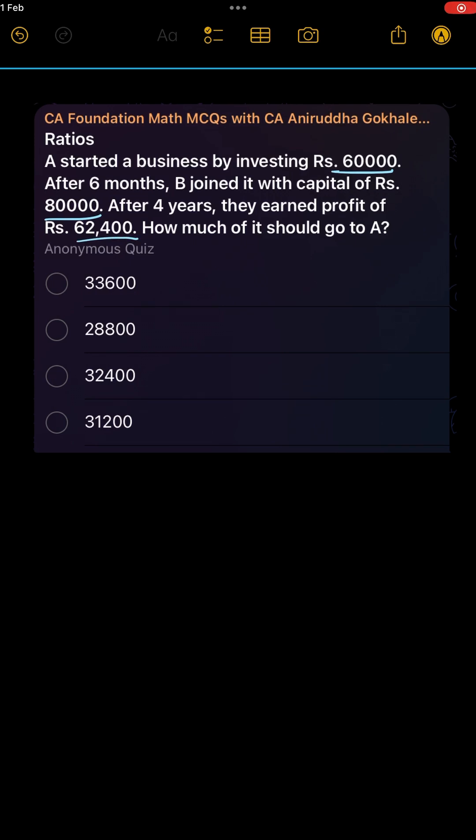When period of investment is different, for A take investment 60,000 multiplied by the period which is 12 months times 4 years, that is 48 months. For B, 80,000 is the investment and period is 3.5 years times 12 months.